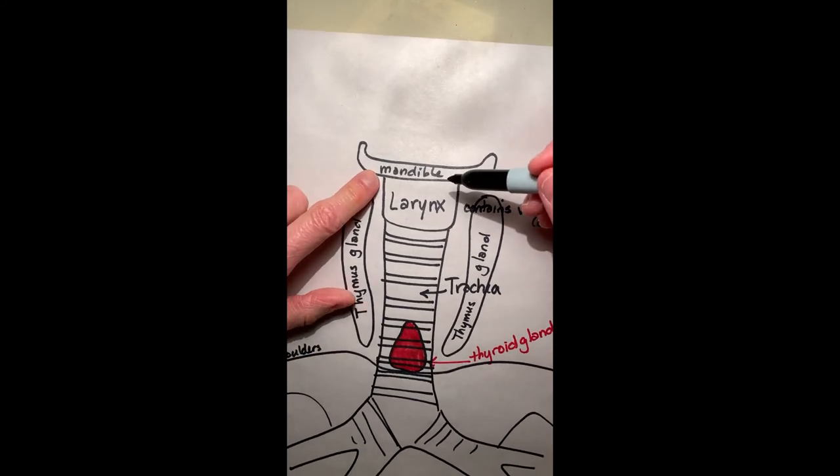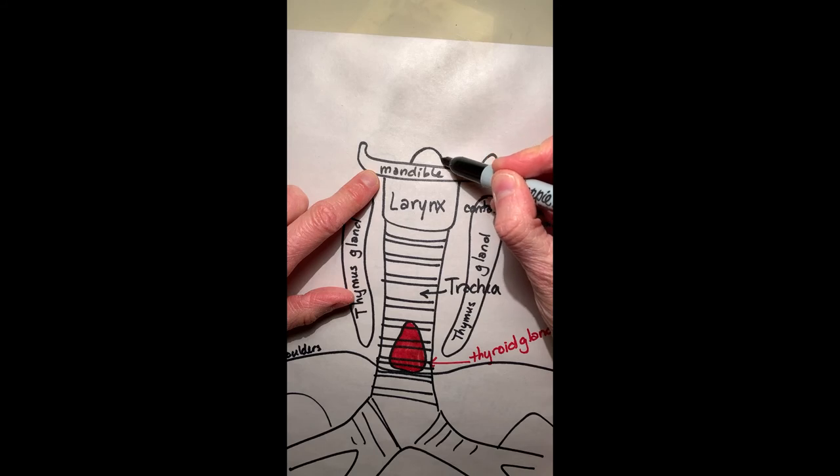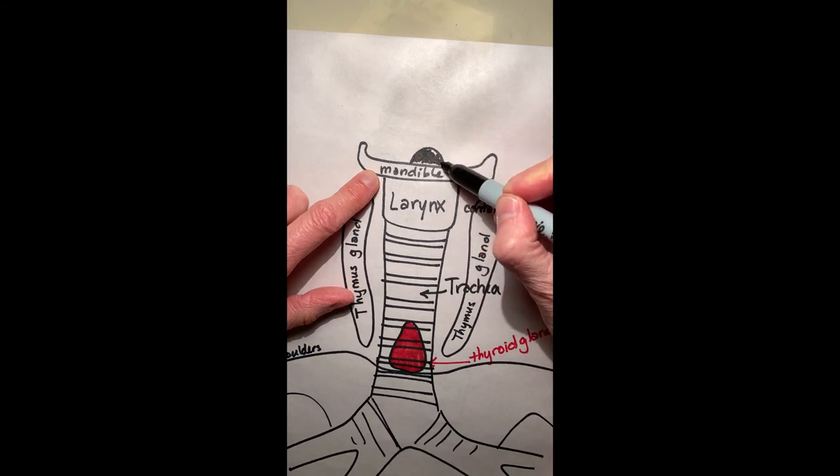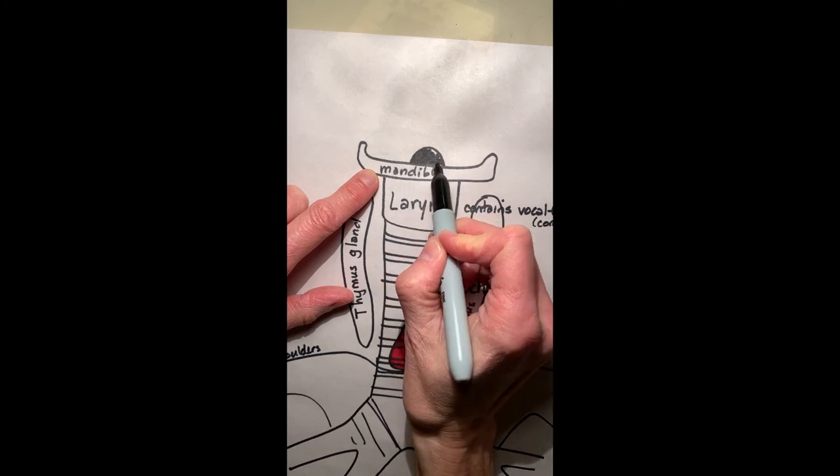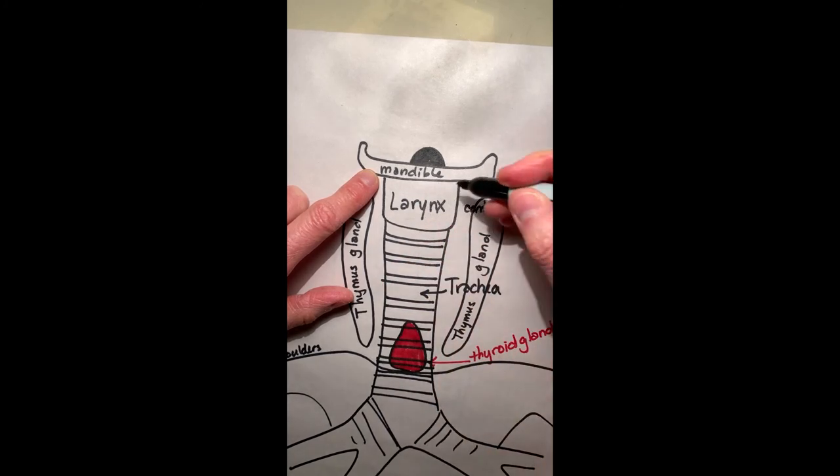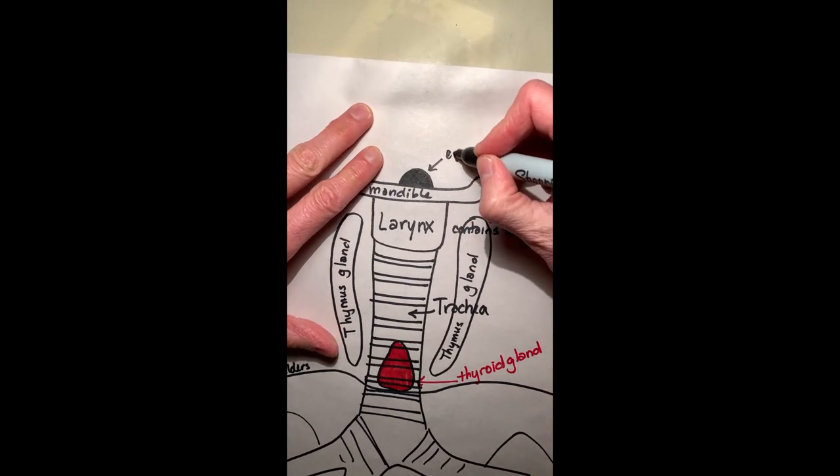Also where I've drawn the mandible here, if you can recall, there is a flap of cartilage sticking up that blocks the entrance to the larynx when we swallow. And that flap of cartilage is again the epiglottis.